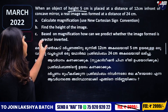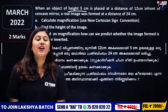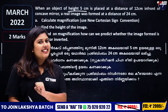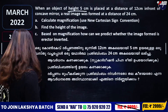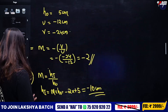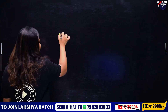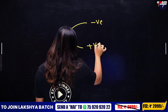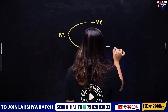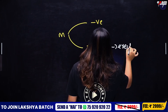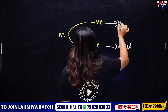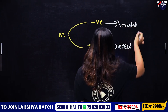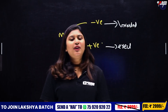Based on the magnification, how do we predict whether the image is formed erect or inverted? If magnification is negative, the image is inverted. If magnification is positive, the image is erect.